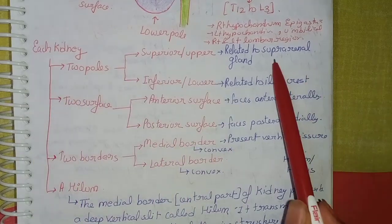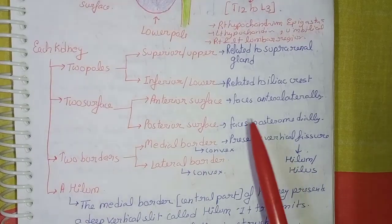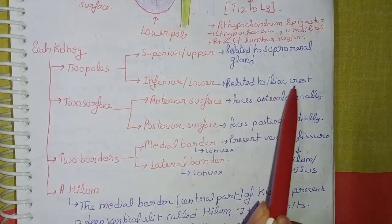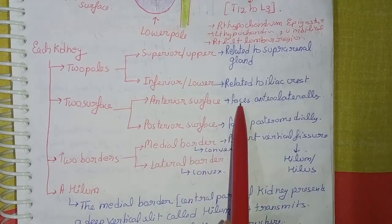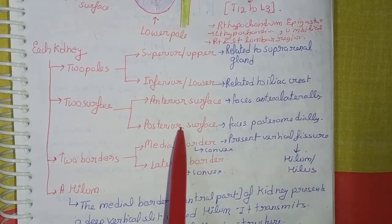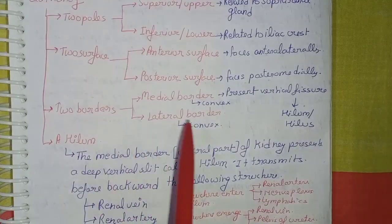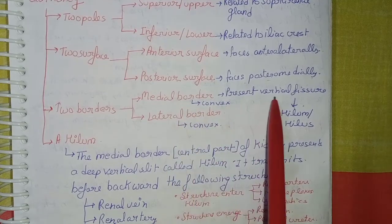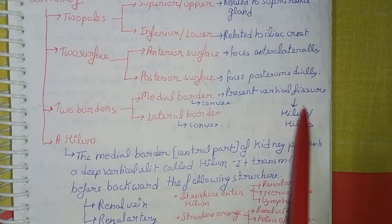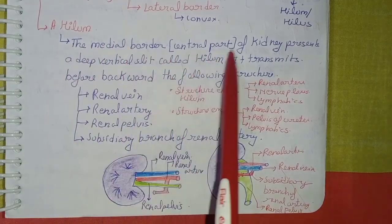The superior pole is related to the suprarenal (adrenal) gland, and the inferior or lower pole is related to the iliac crest. The anterior surface faces anterolaterally and the posterior surface faces posteromedially. The two borders are the medial border and lateral border — medial border is convex and lateral border is also convex. The medial border presents a vertical fissure called the hilum or hilus.